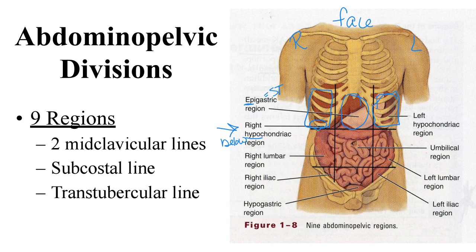Going across the middle row, we have the right lumbar region — the lumbar area refers to our lower back. In the center is the umbilical region, where the belly button sits. Then on the other side is the left lumbar region. In the bottom row, we have the right iliac region — the ilium is the hip bone. In the middle is the hypogastric region: hypo means below, so this is well below the stomach. And then we have the left iliac region on the left side.